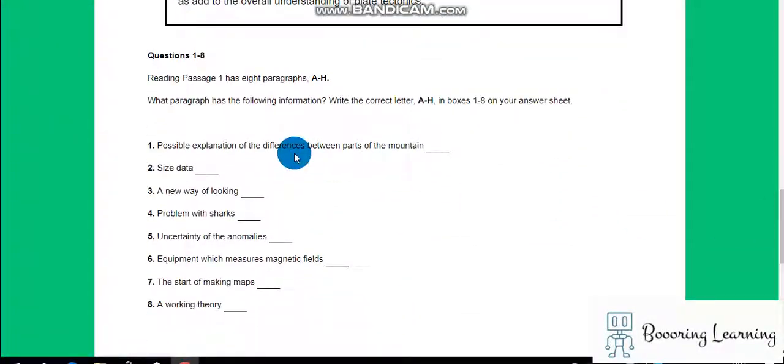Okay, possible explanation of the differences between parts of the mountain, size data, a new way of looking, problem with sharks, uncertainty of the anomalies, equipment which measures magnetic fields, the start of making maps, a working theory.